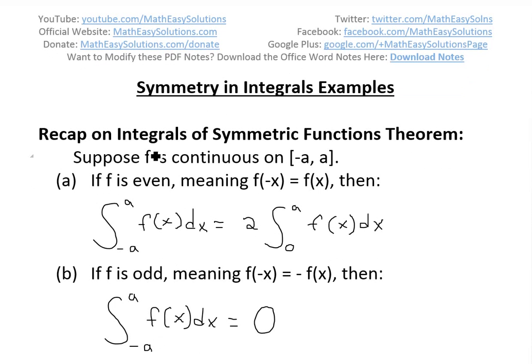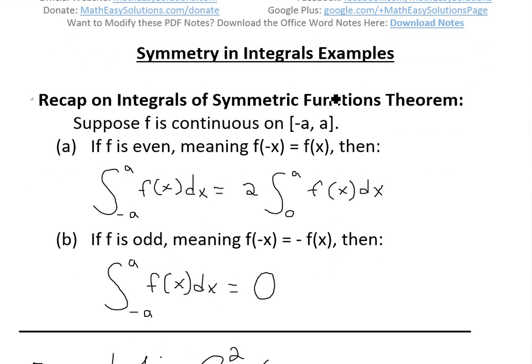Basically, I have to quickly recap on the proof that I went over in a couple videos ago. When you have symmetric functions, suppose that f is continuous on negative a to a.